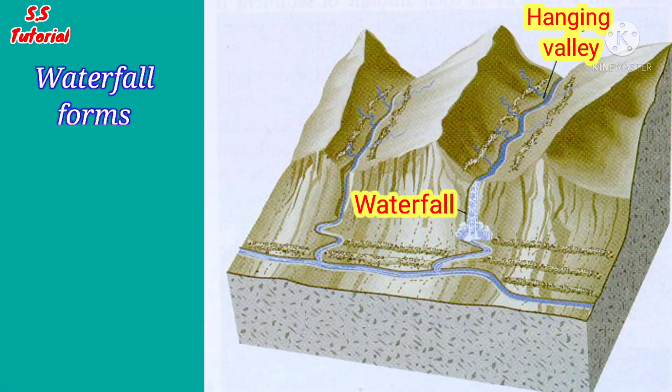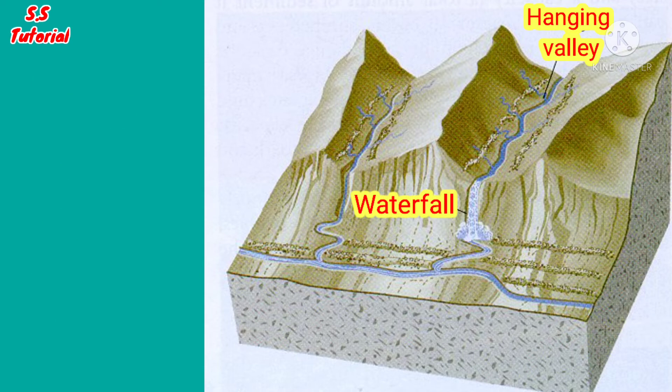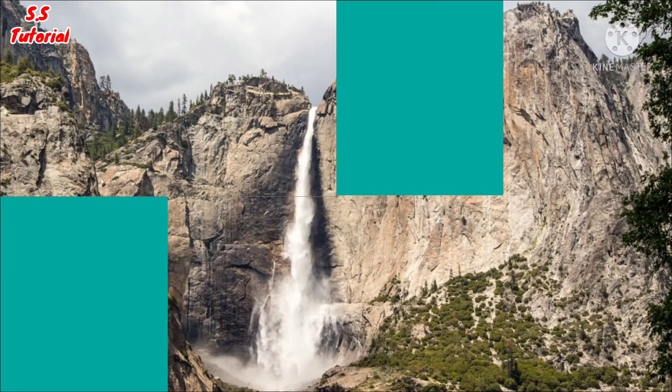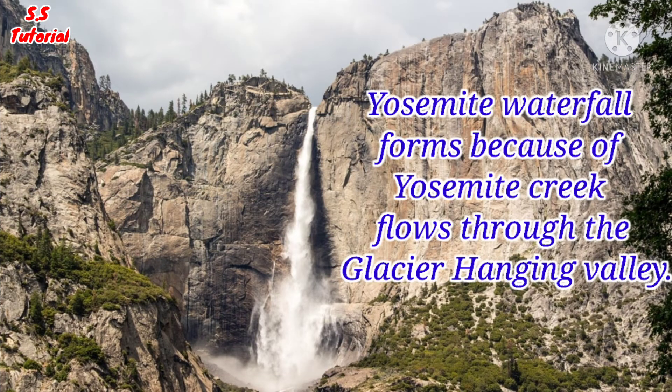Waterfalls are also formed when a river flows over a glacial hanging valley. Yosemite Falls in the USA is formed in this way.